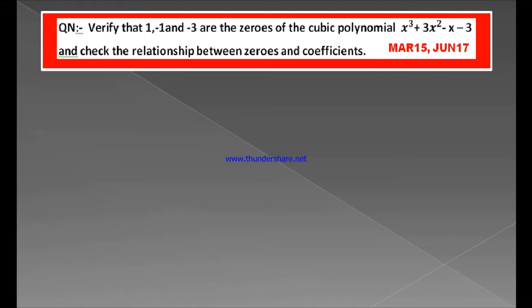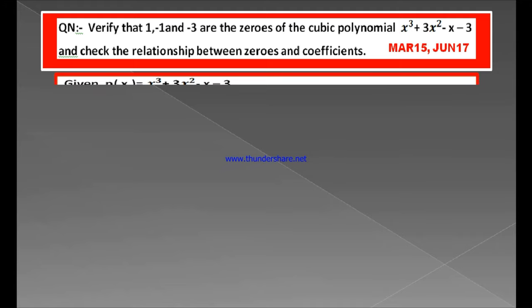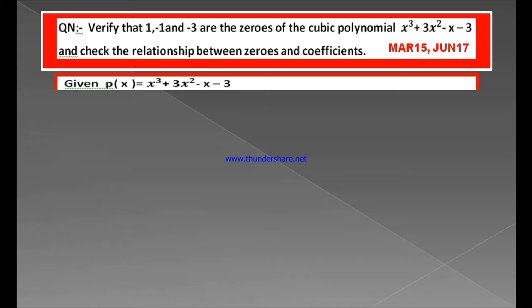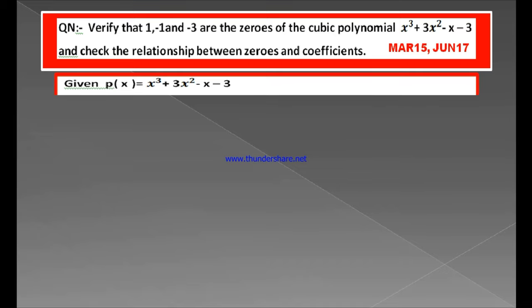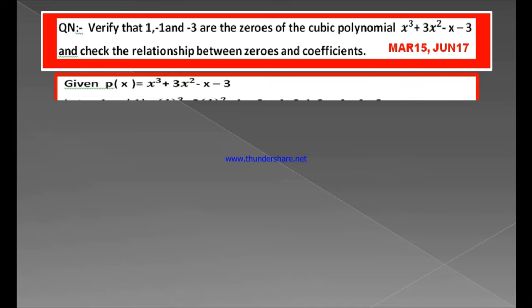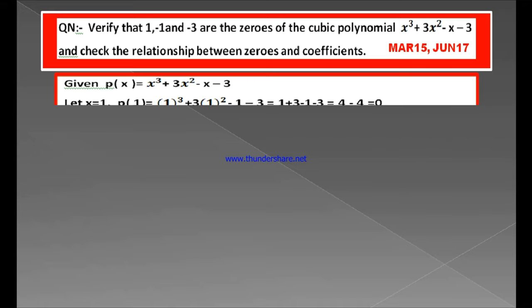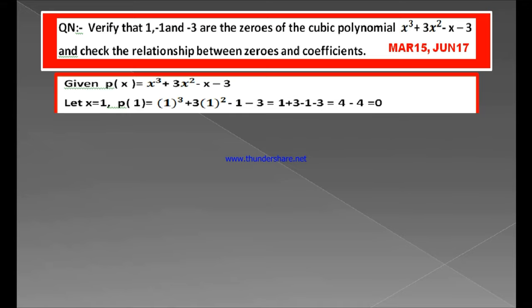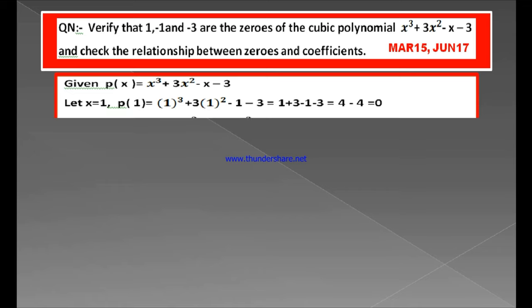I shall repeat the question. Verify that 1, minus 1, and minus 3 are the zeros of the cubic polynomial x cubed plus 3x squared minus x minus 3, and check the relationship between zeros and coefficients. Here is the solution. In order to solve this, let us take the given polynomial as P of x. P of x is equal to x cubed plus 3x squared minus x minus 3.